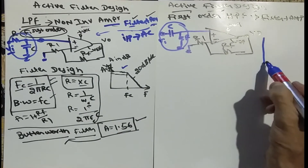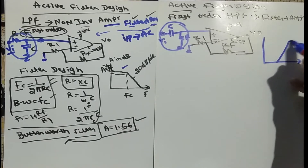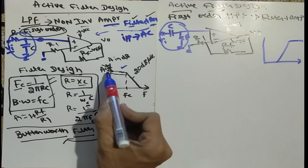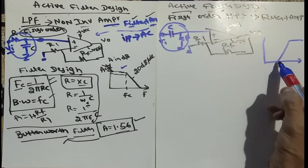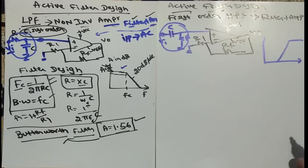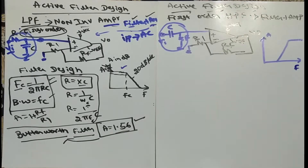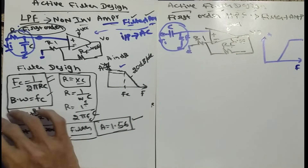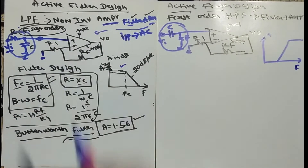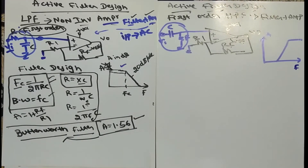When you look at the waveform, it is opposite to the low pass: here the signal first passes then comes back, whereas in the low pass it first does not pass then goes up and passes. That is the major difference. The Butterworth filter coefficient is 1.56, same as in the low pass. I am not going into the design details since they are similar to the low pass filter.